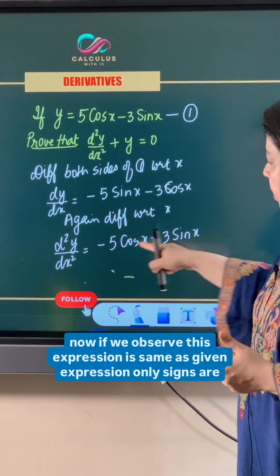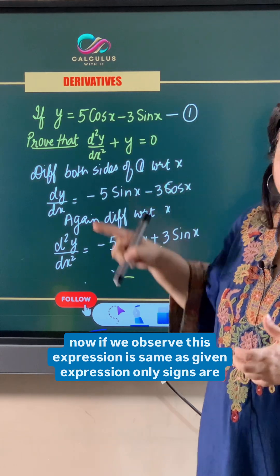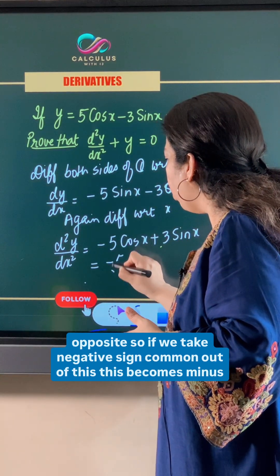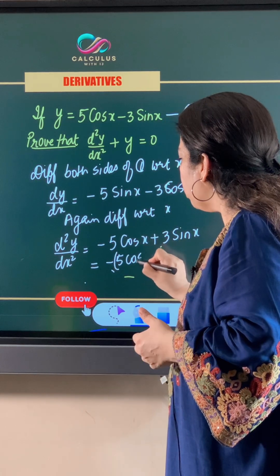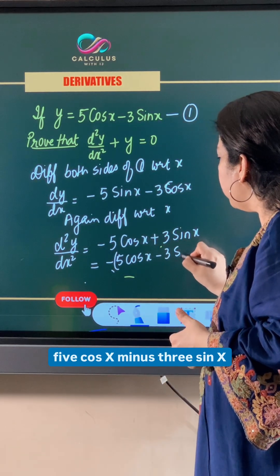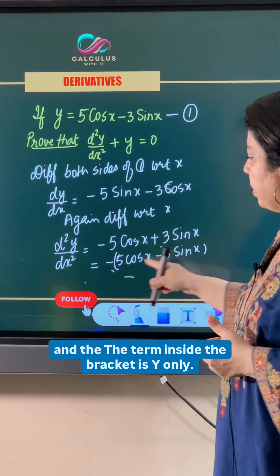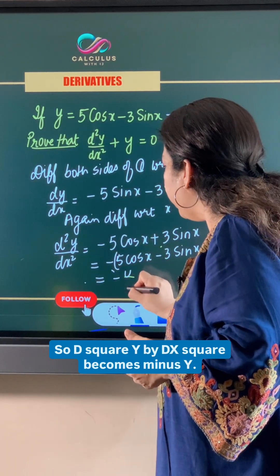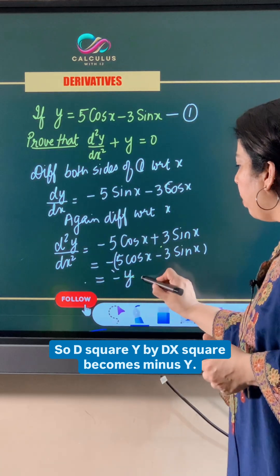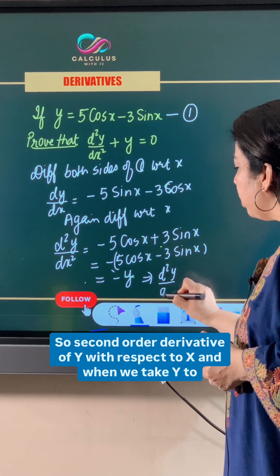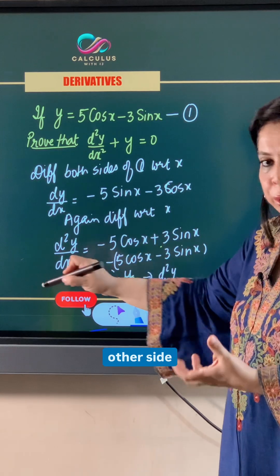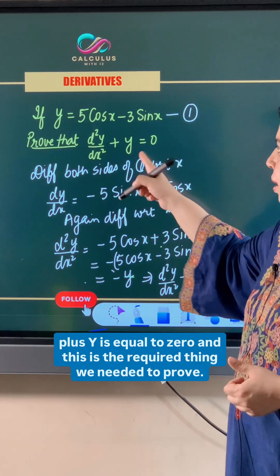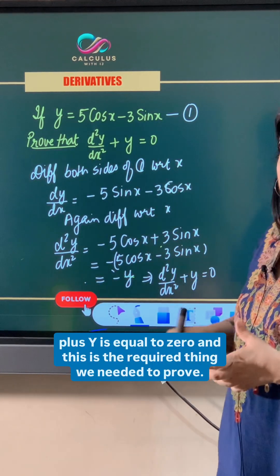Now, if we observe, this expression is the same as the given expression, only with opposite signs. So if we take the negative sign common, this becomes minus of (5 cos x minus 3 sin x), and the term inside the bracket is y only. So d²y/dx² equals minus y, and when we take y to the other side, d²y/dx² plus y is equal to 0, which is the required result we needed to prove.